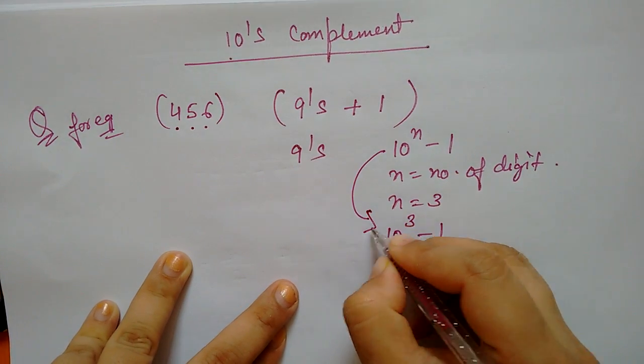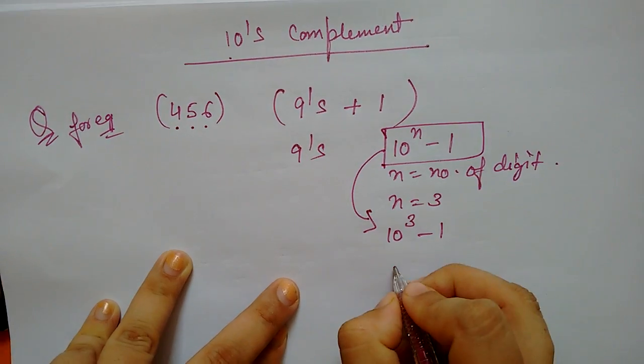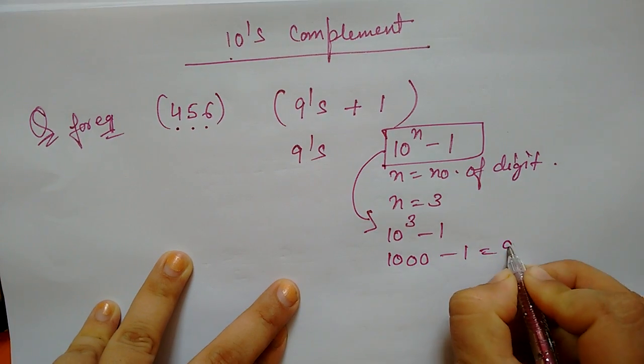We will put the value in the formula. And if you resolve it, 1,000 minus 1. So, how is it? 999.